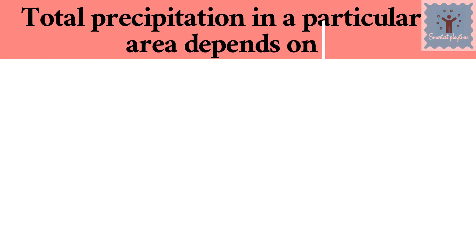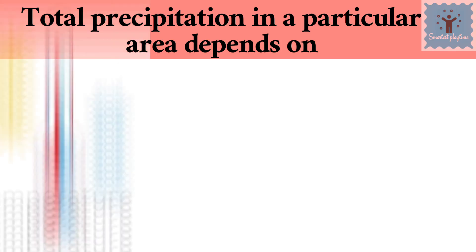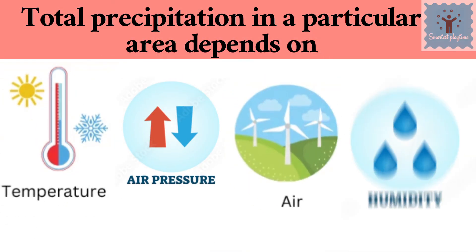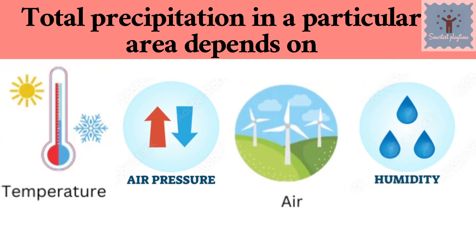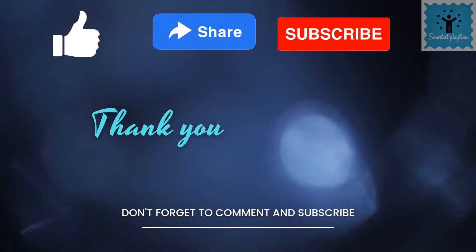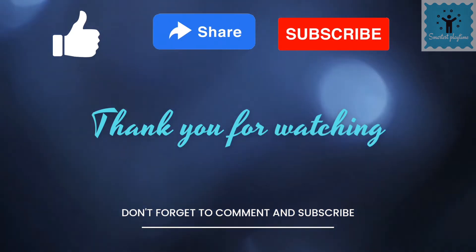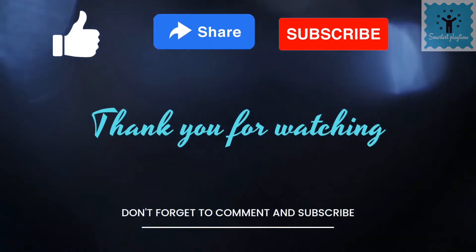The total precipitation in a particular place depends on weather conditions such as temperature, pressure, wind, humidity, and other factors. Hope you enjoyed the lesson today — please like, share, and subscribe to the channel. Thank you for watching.